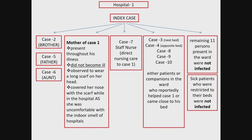The index case was hospitalized in hospital one on 2nd May and died in hospital two on 5th May. On 14th May, his brother, father, and aunt simultaneously presented on the same day with fever, breathlessness, altered sensorium, and vomiting — with a history that a close relative had died ten days prior.